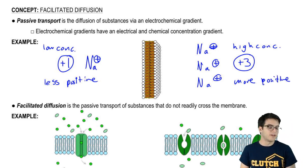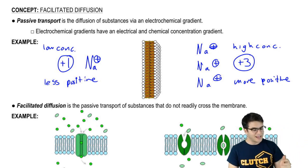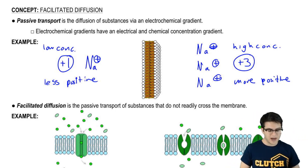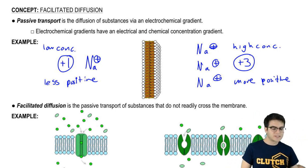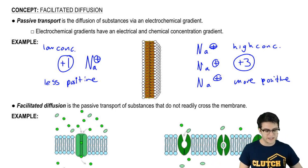So we have a chemical gradient, a chemical concentration gradient, and we have an electrical gradient due to the charges on the ions. Passive transport is simply diffusion due to these electrochemical gradients.